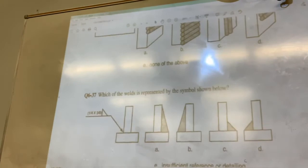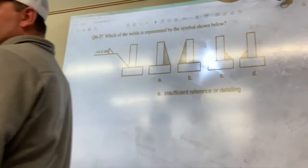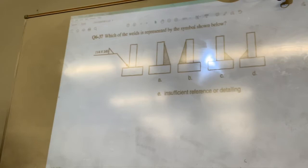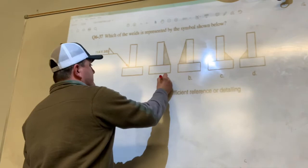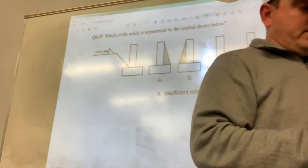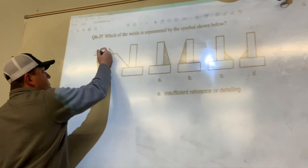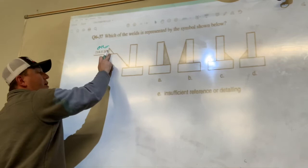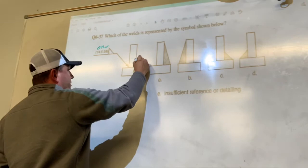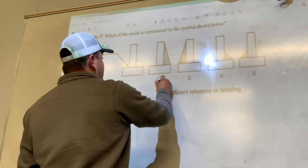Let's go down to 37. It could be... This is the other side. Little symbol. Our arrow is on this side, which means the weld is going to have to go on the other side. Alright, so we know it's going to be A or C.